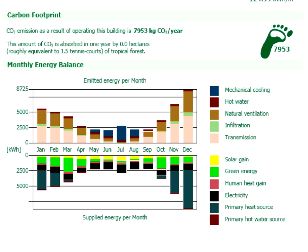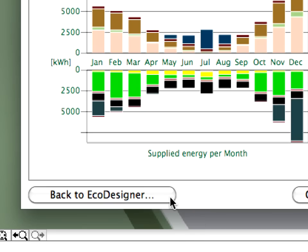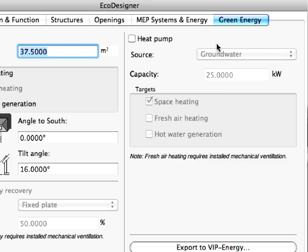Let's have a closer look at the Monthly Energy Balance graph. Notice that there are no more dark green regions below June, July and August. The energy generated by the solar panels greatly reduces the energy input required to generate hot water.